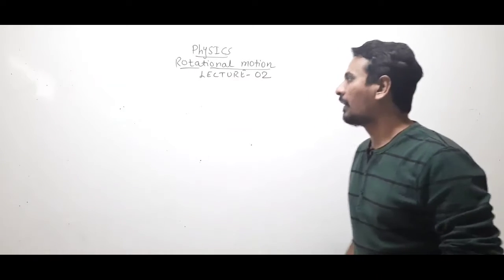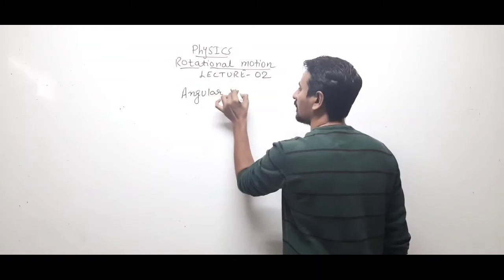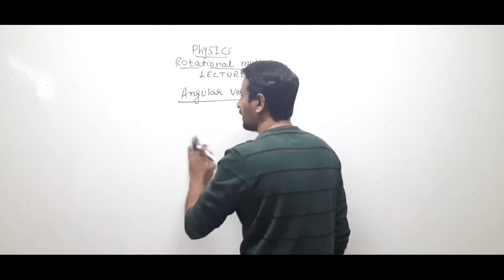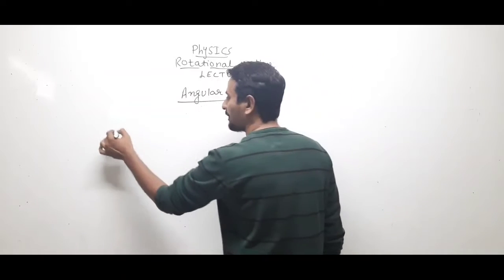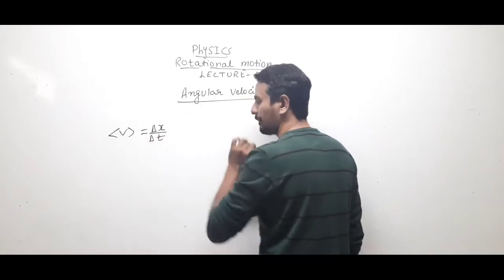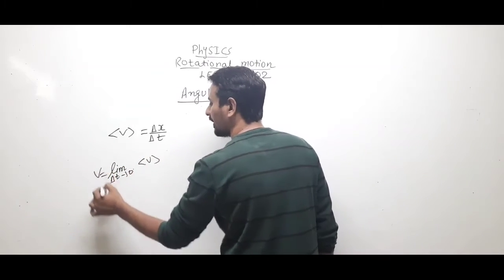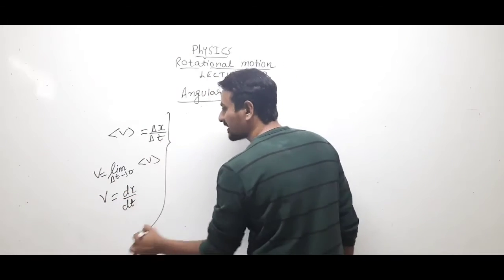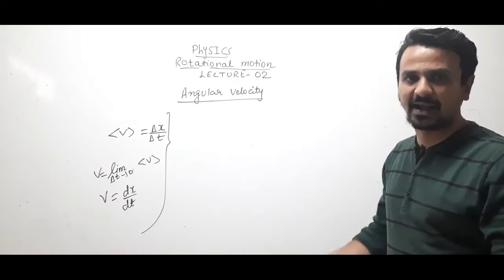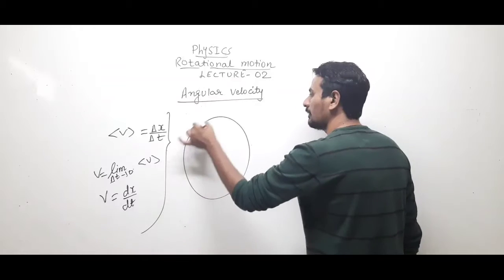The unit of angular displacement is radian; one revolution equals 2π radians. Now, what is angular velocity? Just as in motion in one dimension we defined average linear velocity as Δx/Δt and instantaneous velocity as dx/dt, we will now define angular velocity analogously — including its average form, instantaneous form, direction, and unit.